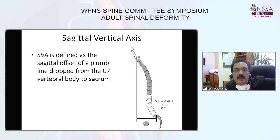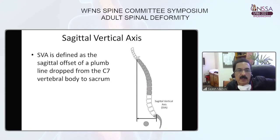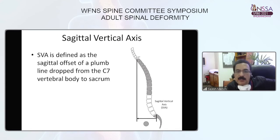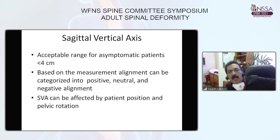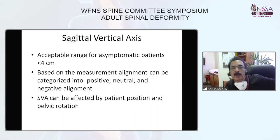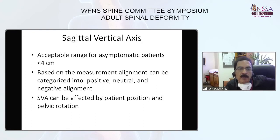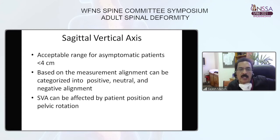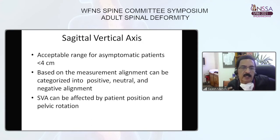SVA, or the sagittal vertical axis, is defined as the sagittal offset of a plumb line dropped from C7 to the sacrum. Depending on where it falls, it can be categorized as positive, neutral, or negative. If the line falls anteriorly it is positive, and if posteriorly it is negative.